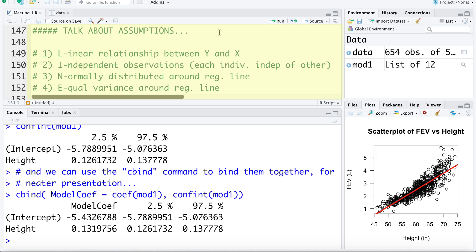We assume that the observations are independent, that person 1, person 2, person 3 are all independent of each other and so on. We assume that observations are normally distributed around the regression line, as well as variance around the regression line is equal or constant.